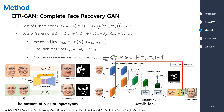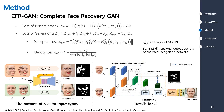The loss function for the generator GE consists of five loss terms: adversarial loss, occlusion mask loss, occlusion-aware reconstruction loss, and perceptual loss and identity loss to preserve identity.